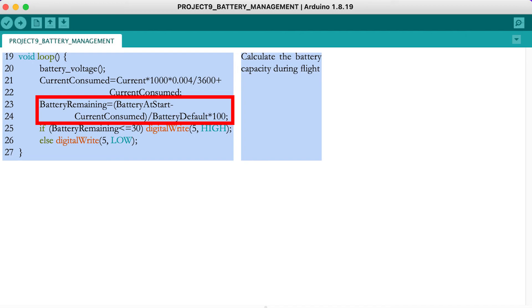Now calculate the remaining battery capacity. If the battery capacity falls below 30%, illuminate the red LED again. So this concludes the necessary code for the battery management part of your quadcopter.